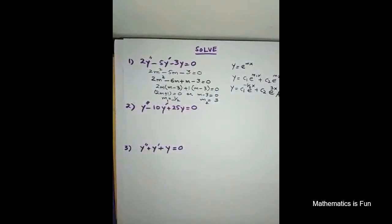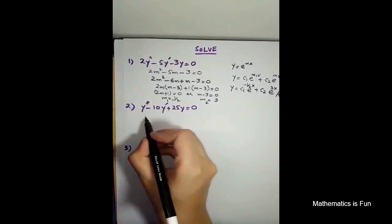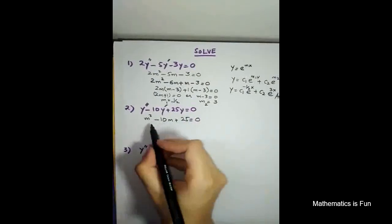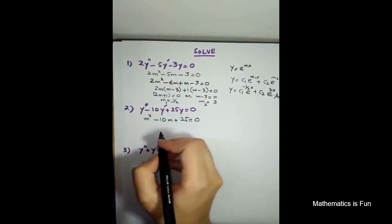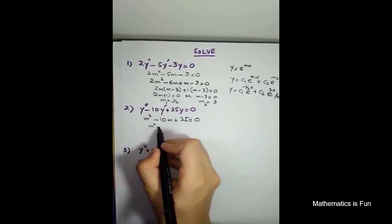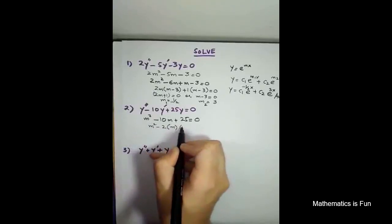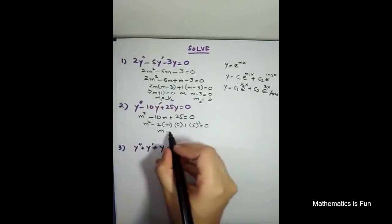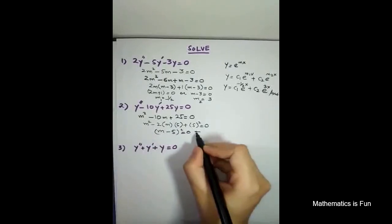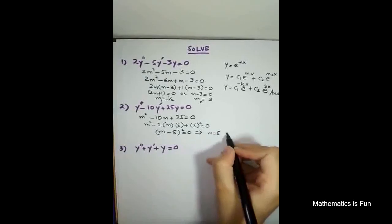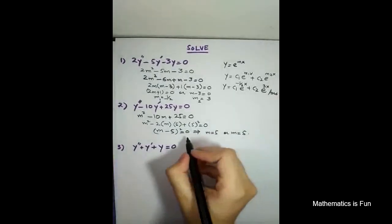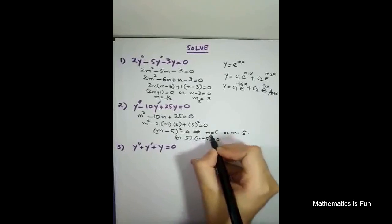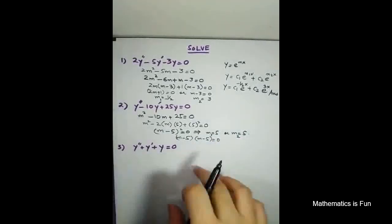Now we come to the example number 2. Example number 2, you can do it your own self. y double dash minus 10y' plus 25 equals to 0. So I can see that is the complete square of this thing. Like this m minus 5 plus 5 square equals to 0. So that means it's a complete square of m minus b whole square equals to 0. So that means either m equals to 5 or m equals to 5. So m1 equals to 5 and m2 equals to 5.